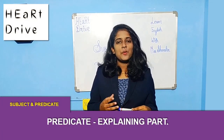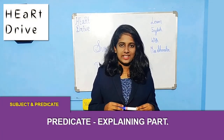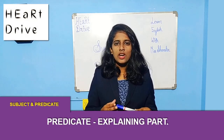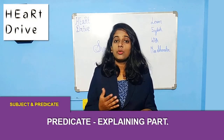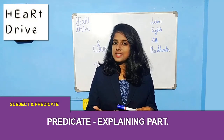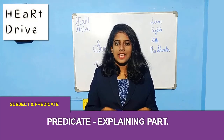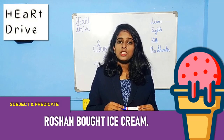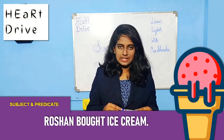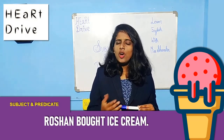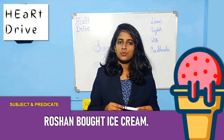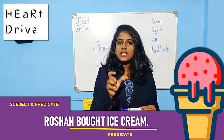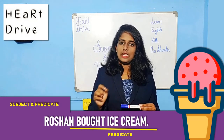Now, let us learn what is a predicate. The predicate of a sentence tells us what the subject is doing or what the subject is. For example, 'Roshan bought ice cream.' The subject in the sentence is Roshan. What did the subject Roshan do? He bought ice cream. So, 'bought ice cream' is the predicate here.